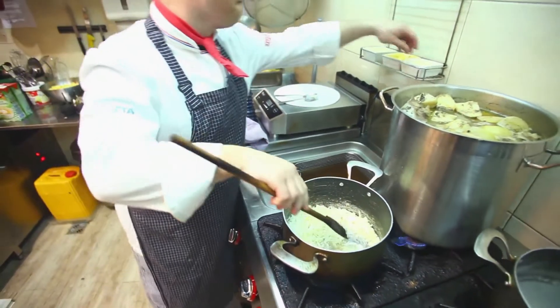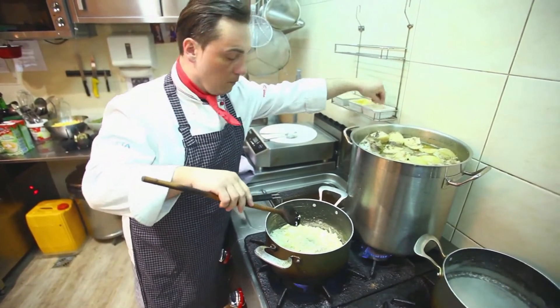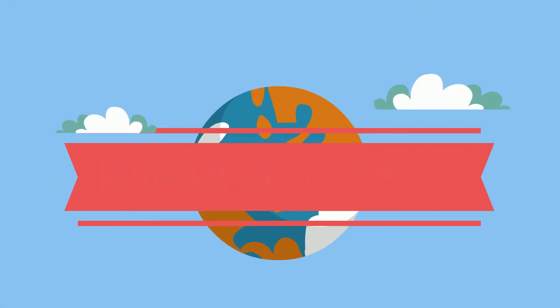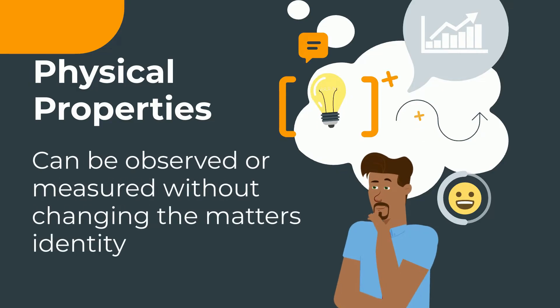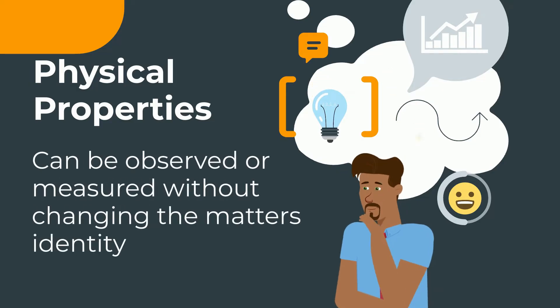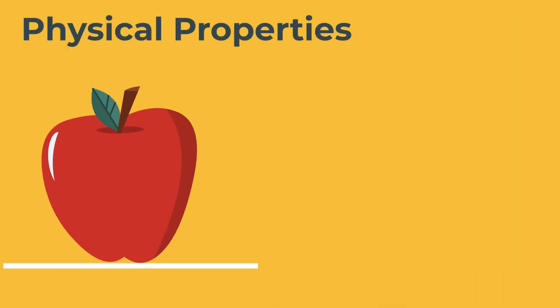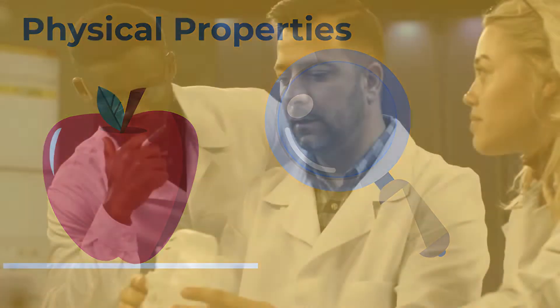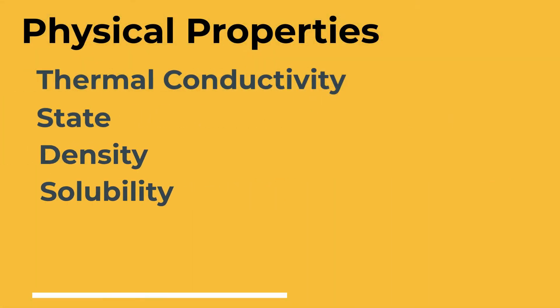Have you ever wondered why many pots and pans are made up of some type of metal? Welcome to Moo Moo Math and Science and Physical Properties. A physical property of matter can be observed or measured without changing the matter's identity. For example, you don't have to change an apple's identity to see its color. Physical properties are often used to identify objects. Let's take a look at six examples of physical properties.